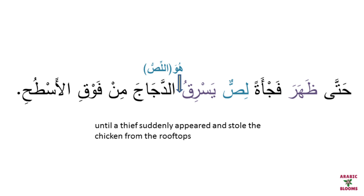يسرق الدجاج — stealing the chicken. Here the subject is invisible. Who is stealing? A لص. So the subject must come after the verb, even if invisible. We use a pronoun: يسرق هو — meaning the thief. الفاعل مستتر — the subject is invisible or hidden. It is supposed to be يسرق اللص الدجاج, but since لص was already mentioned, we say يسرق الدجاج — stealing the chicken من فوق الأسطح, from the top of the roofs.